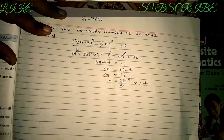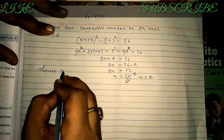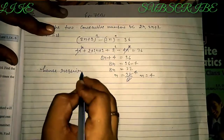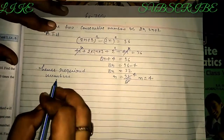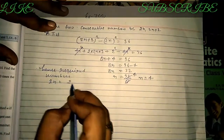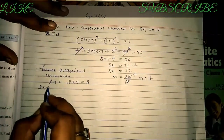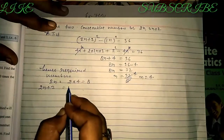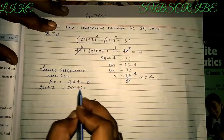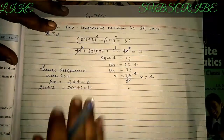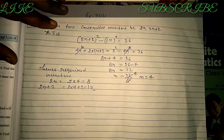We found x = 4. What were we asked to find? Find the numbers. Hence, the required numbers are 2x = 2 × 4 = 8, and 2x + 2 = 2 × 4 + 2 = 10. So the required numbers are 8 and 10.